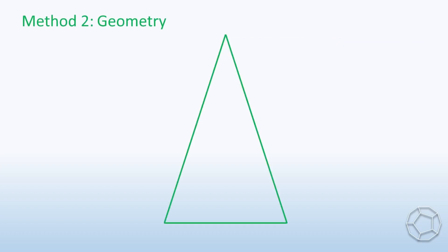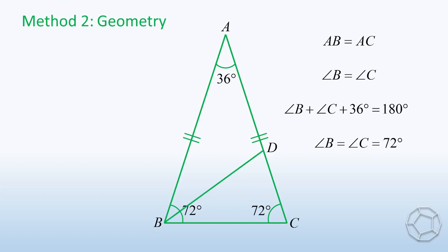Consider triangle ABC, where angle A is equal to 36 degrees, and AB is equal to AC. So angle B is equal to angle C. The sum of three angles is 180 degrees, so both unknown angles are 72 degrees. Now, let D be a point on AC, such that BD bisects angle B. The two angles are both 36 degrees.